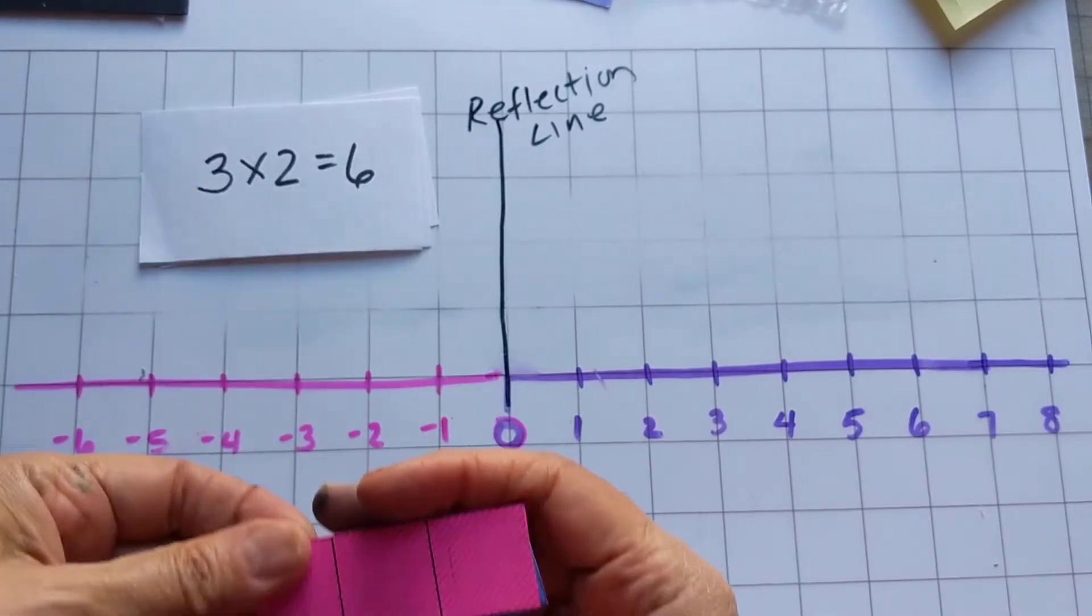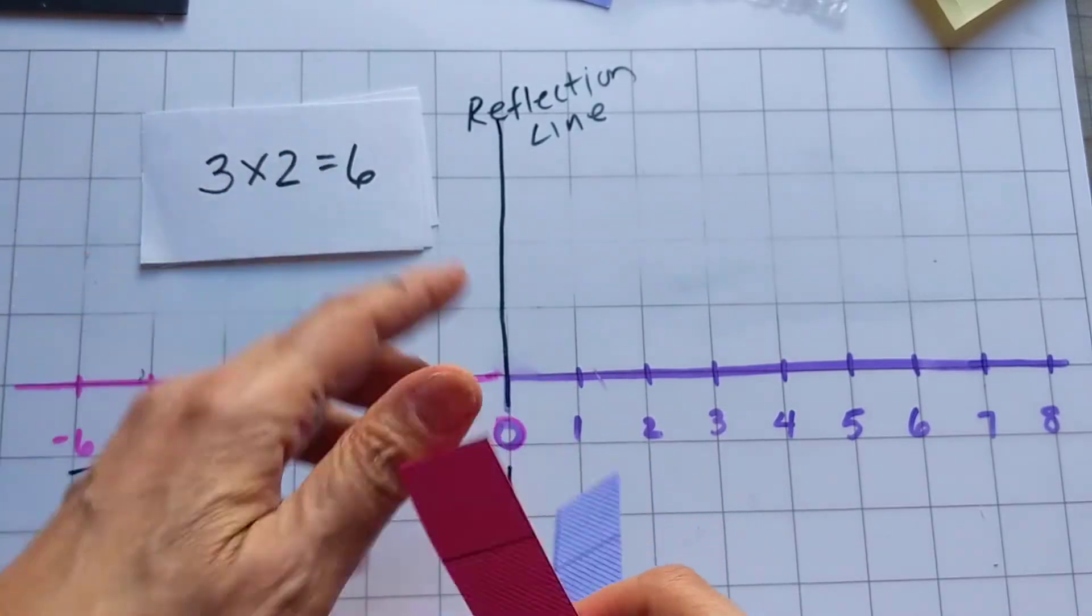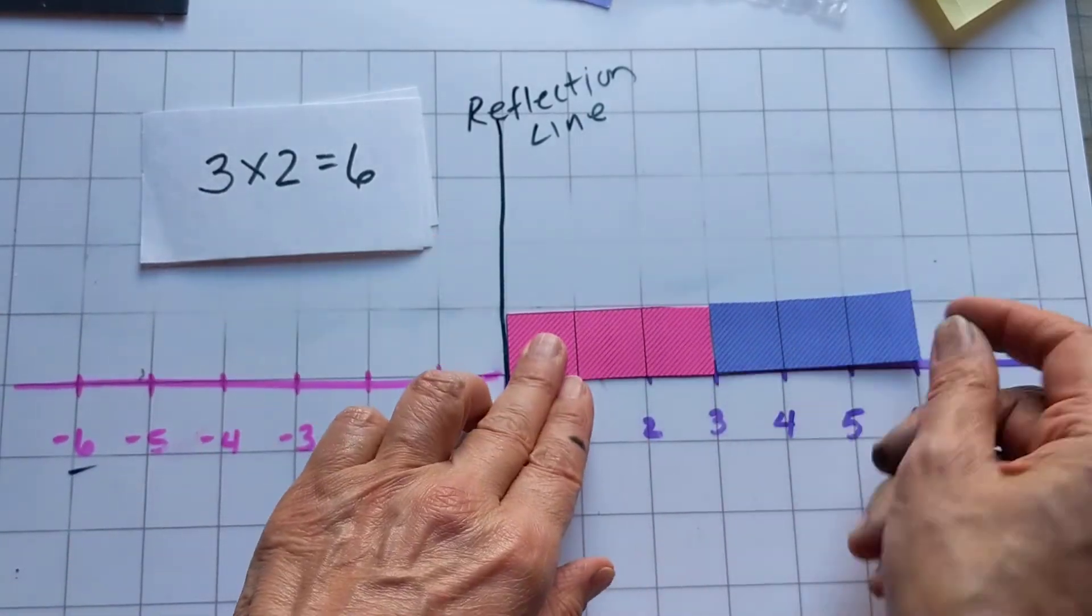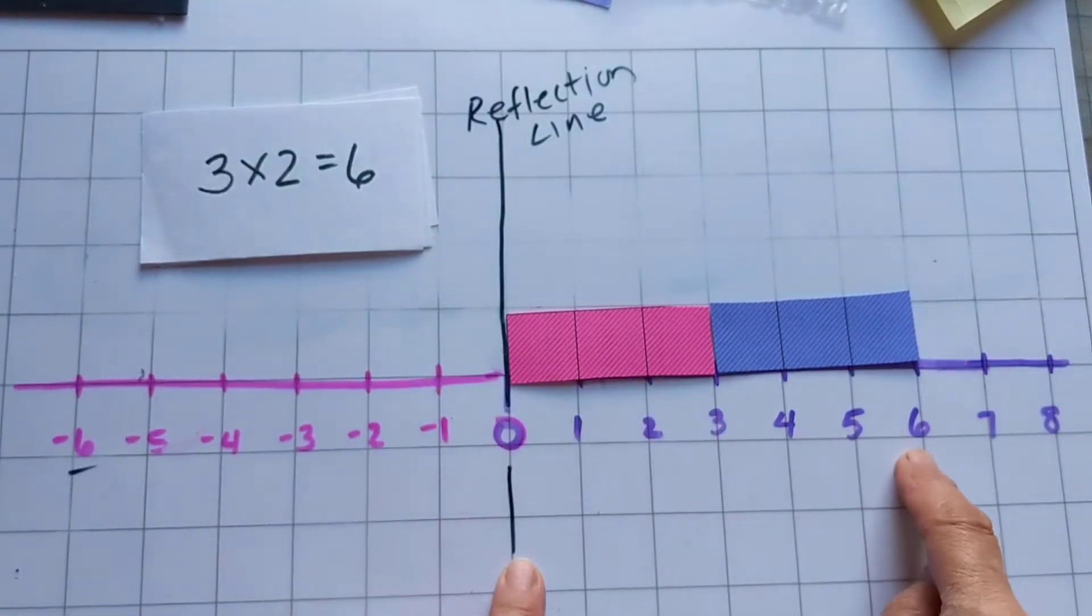Let's start off by looking at two positive numbers multiplied together. Three times two means two groups of three. Put that on the number line, start at zero, you get six.